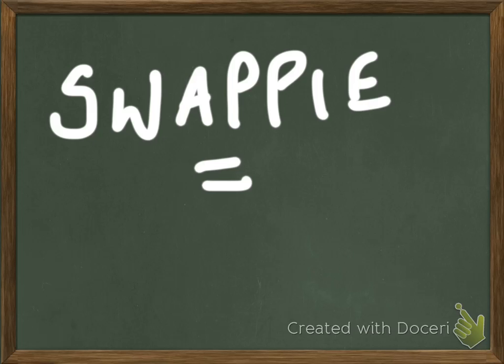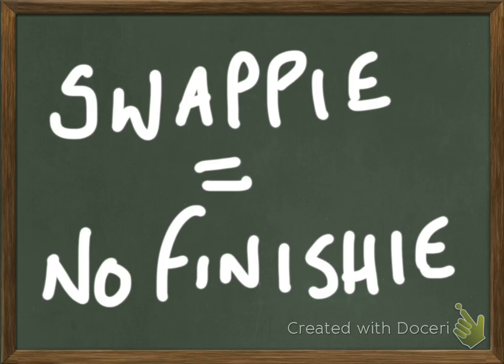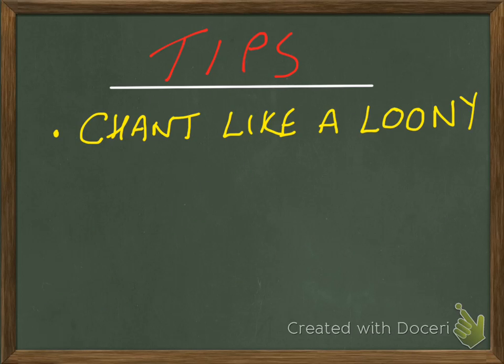I would just like to reiterate: no swappy means you have no finishy. You must get no swaps to say that you've done the final pass. Here's some tips: chant like a loonie, maybe not out loud—you may get chucked out of the examination room—but do chant like a loonie in your head. Keep a bit of speed up with this. It may sound odd but speed is the key, in the flow, in the groove.